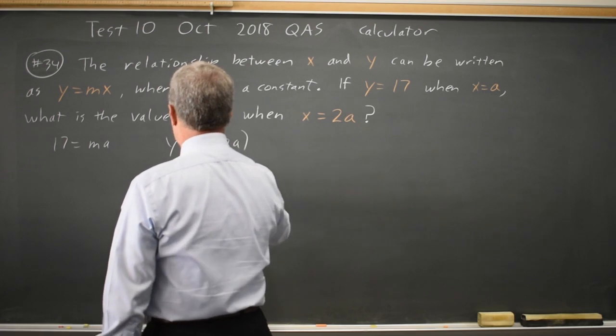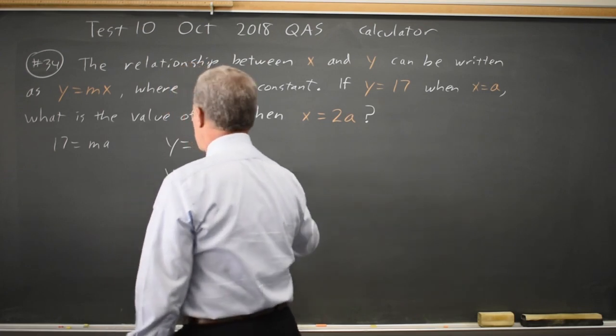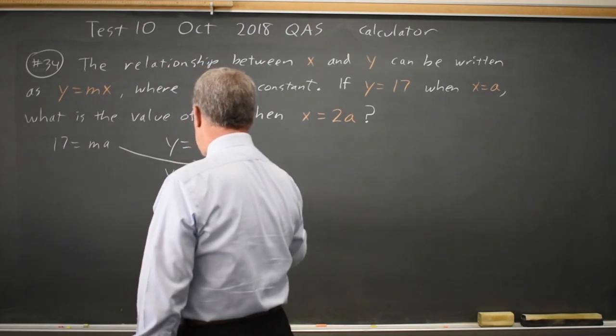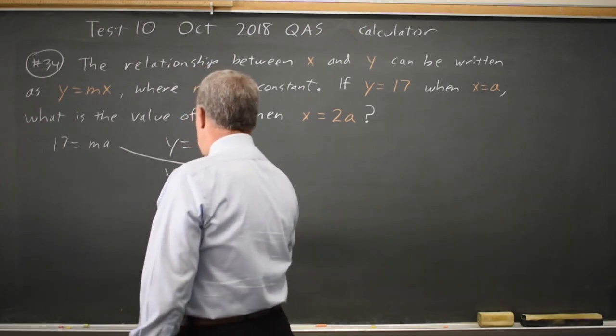Well, that's y equals 2ma, and we already saw that ma is 17, so y equals twice 17, which is 34.